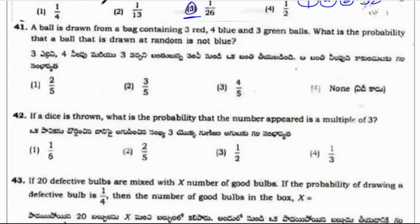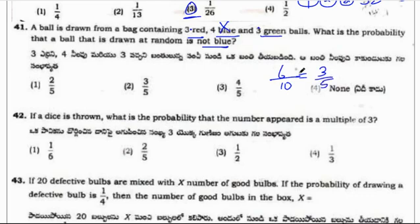A ball is drawn from a bag containing 3 red, 4 blue, and 3 green balls. What is the probability that the ball drawn at random is not blue? Total balls are 3+4+3 = 10 balls. Blue colored balls are 4, so not blue is 3+3 = 6. Therefore 6/10 = 3/5. The answer is option 2, 3/5.